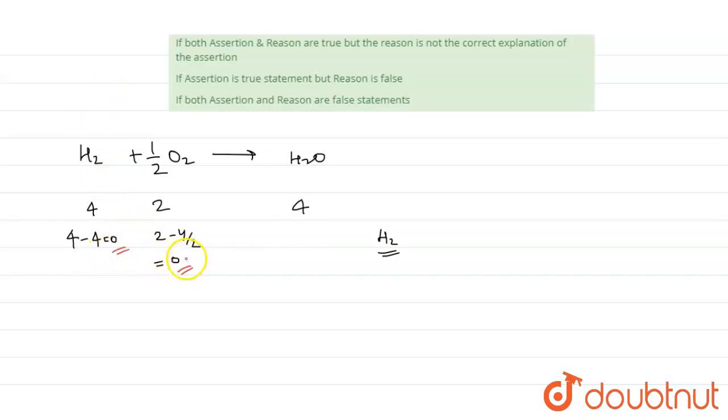both are getting consumed when H2 is taken as limiting reagent. So that's why we can't say that H2 is limiting reagent because one should be left behind. So H2 is not a limiting reagent. Now let's take another thing, that is, let's take O2 as limiting reagent.